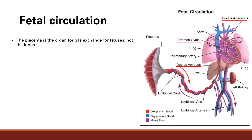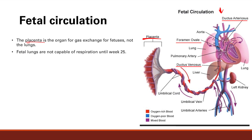Let's turn our attention to the fetal circulation, which in some ways is the direct opposite of the adult circulation. In the fetal circulation, the key thing is the placenta — this is the organ for gas exchange for fetuses, not the lungs. The fetal lungs are not capable of respiration until week 25; they're still developing. And even after that, fetuses have a very high pulmonary vascular resistance — all the blood vessels in the lungs are scrunched up, making it very hard for blood to flow through them.